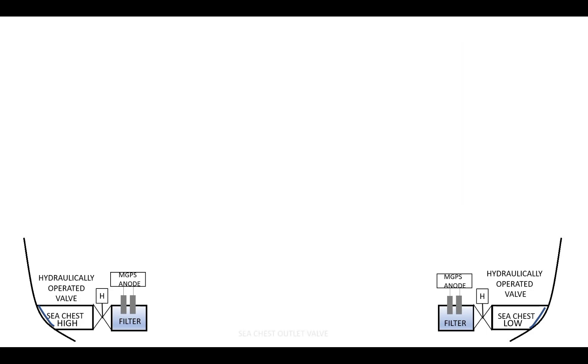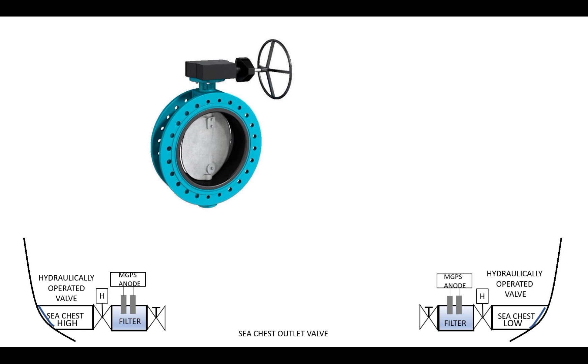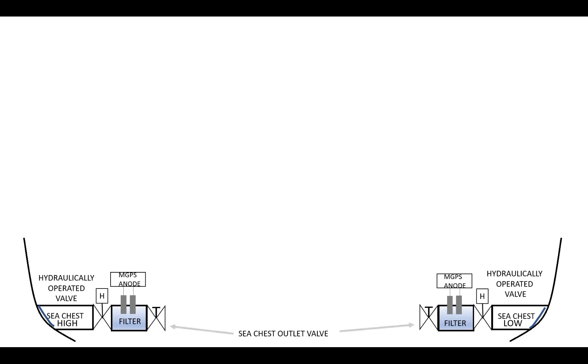Sea chest outlet valve is used to isolate the strainer if maintenance such as cleaning and reconditioning is needed. It can be operated manually on the local side. Main sea water crossover line or sea water pipe is coated with rubber to protect the pipe material from corrosion of sea water. It is mainly connected to different sea water pumps.